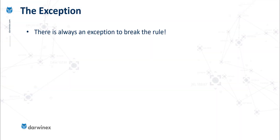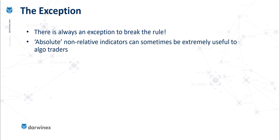But having said all of that, there is of course, for every rule, an exception to break it. And in this case, this is because absolute non-relative indicators can still sometimes be extremely useful to algo traders.